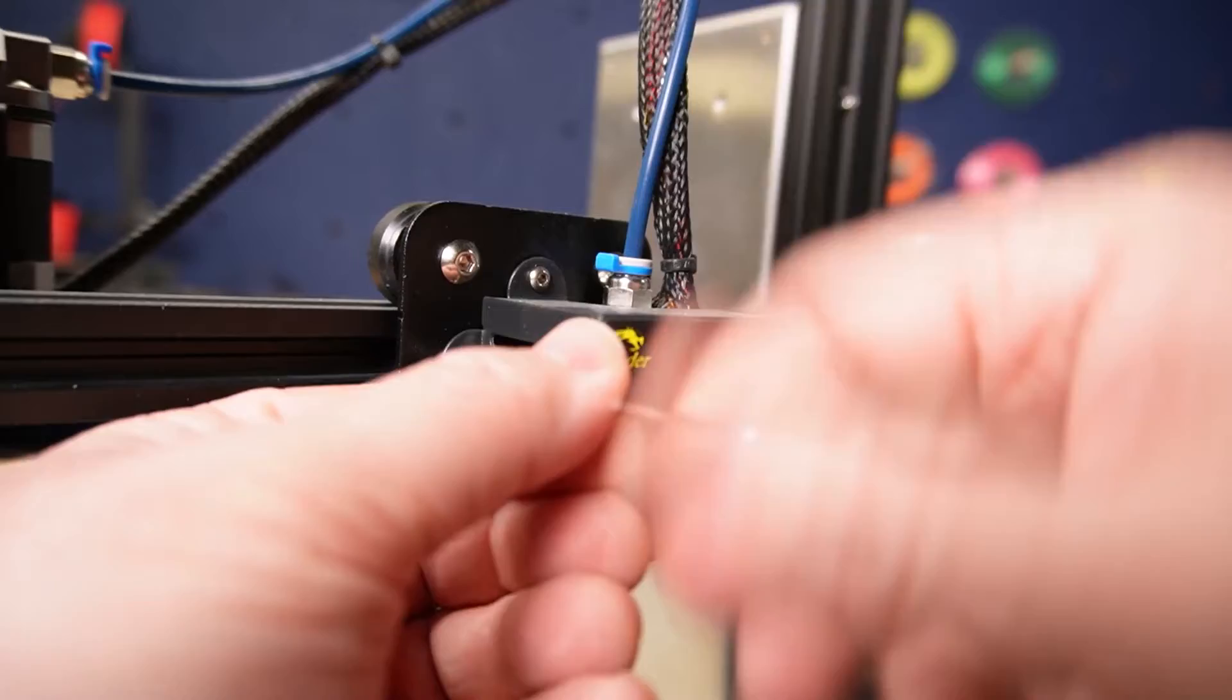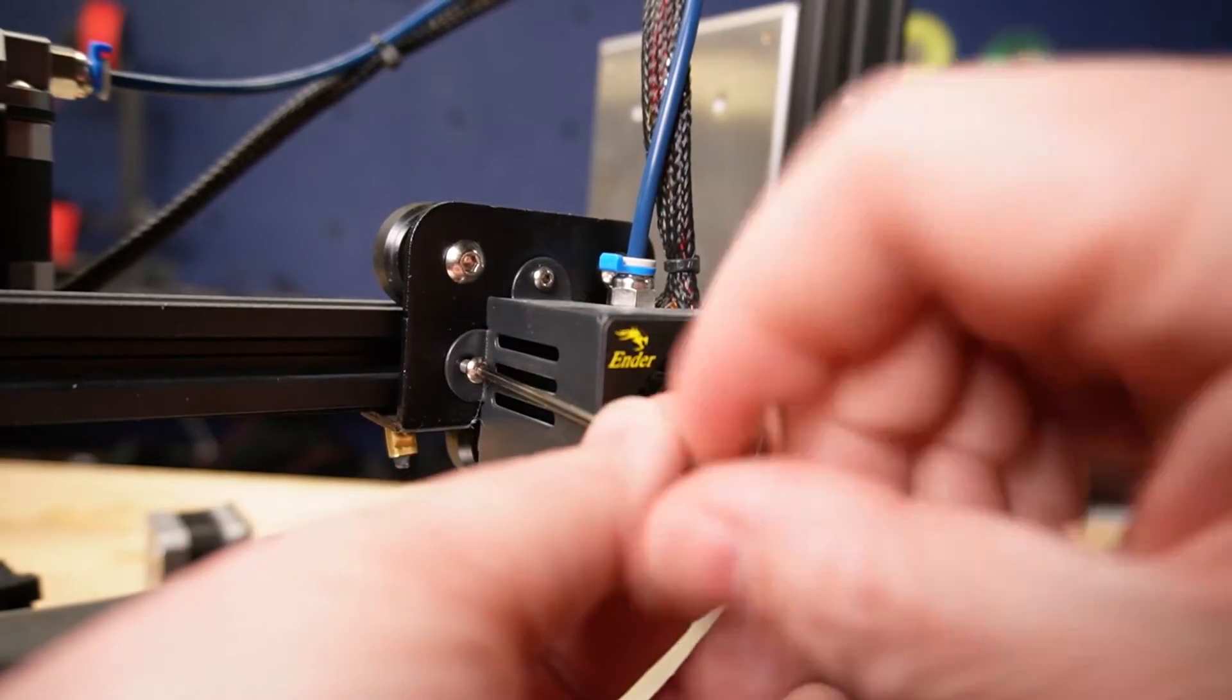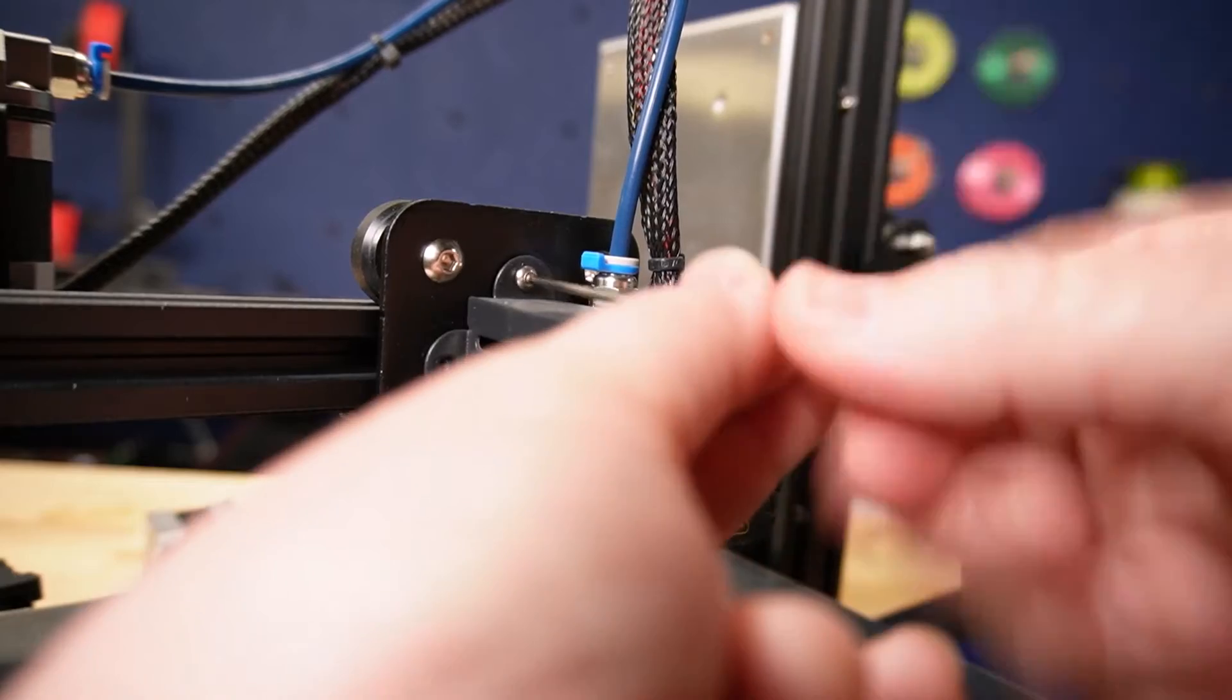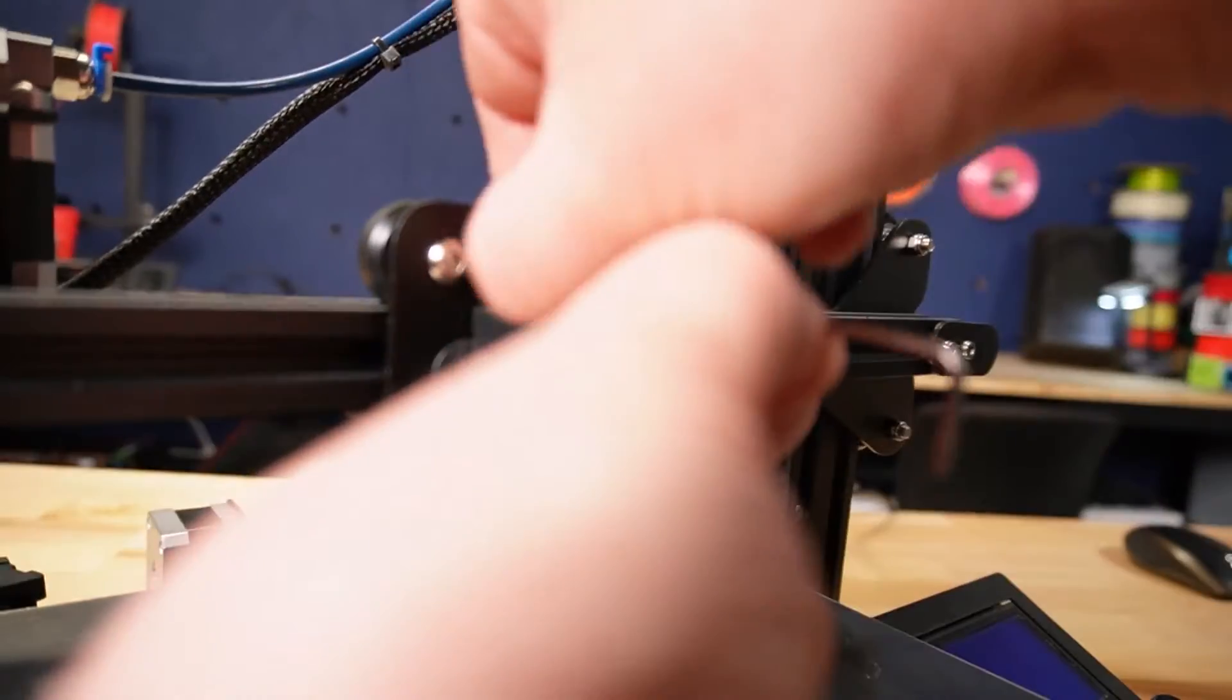The first thing to do is figure out how we can remove the shroud from in front of the hot end. On this Ender 3 Pro, we're going to take these two screws off, one on the left side and the other on the top.